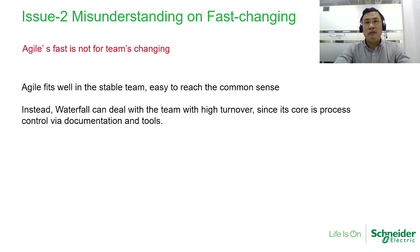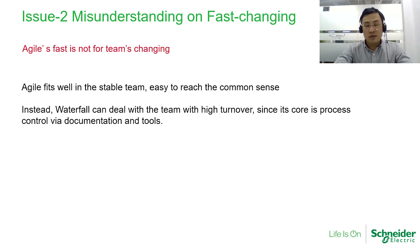The second misunderstanding is about fast changing. Agile's speed is not about frequent team changes. Agile fits well with a stable team where it is easy to reach a common consensus. Instead, waterfall can handle teams with many newcomers, since the waterfall model relies on process control and documentation within the team. But for Agile, we rely on the stable team for efficient communications.